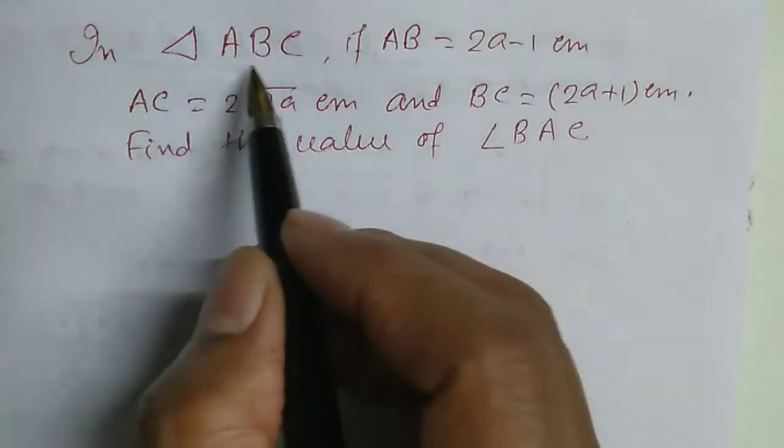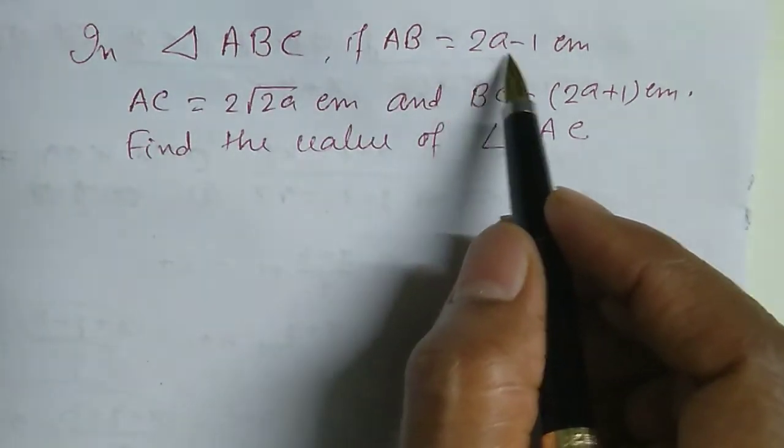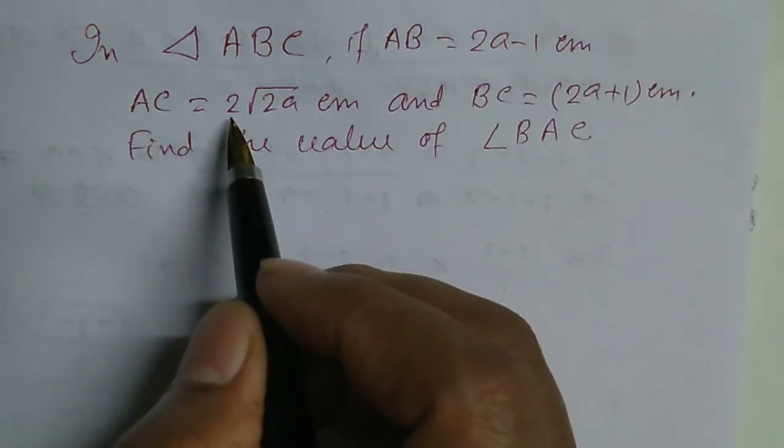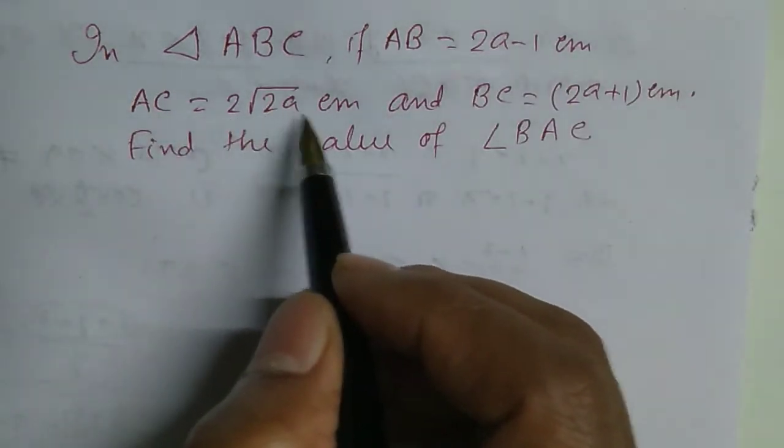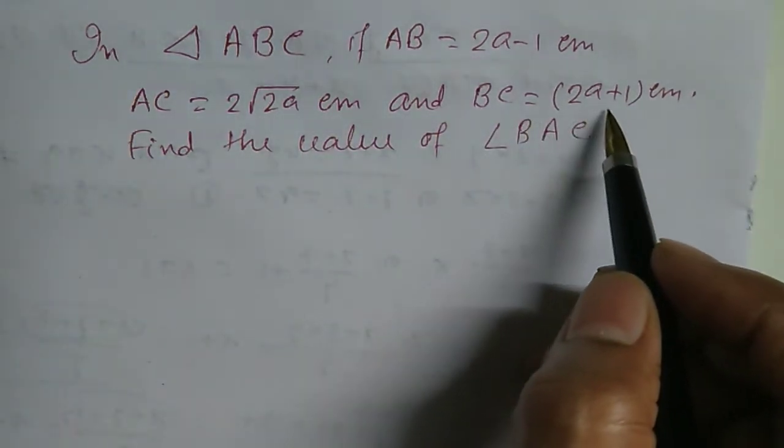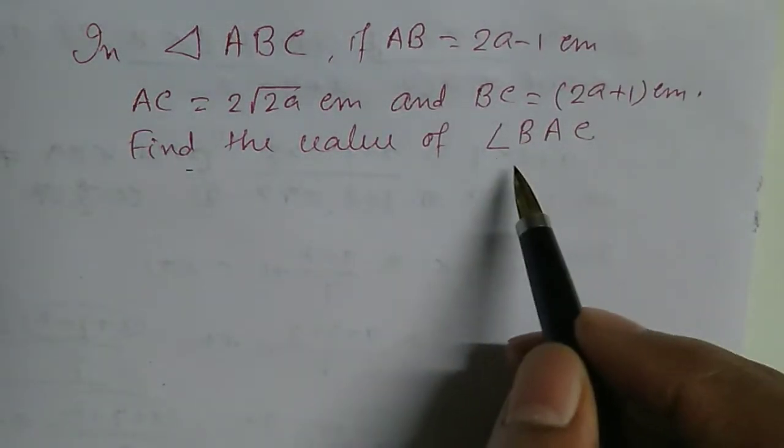In triangle ABC, if AB equals 2a minus 1 centimeter, AC equals 2 root 2a centimeter, and BC equals 2a plus 1 centimeter, find the value of angle BAC.